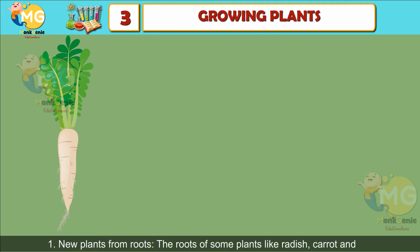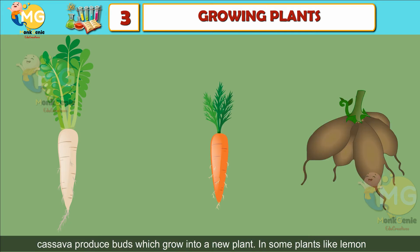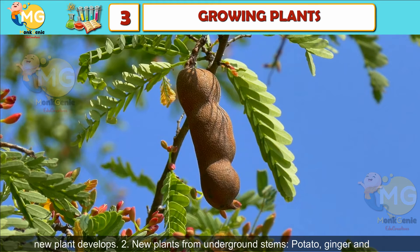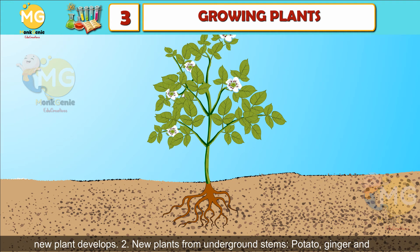New plants from roots: the roots of some plants like radish, carrot, and cassava produce buds which grow into a new plant. In some plants like lemon and tamarind, root cuttings when put in moist soil form roots and shoots, and a new plant develops.